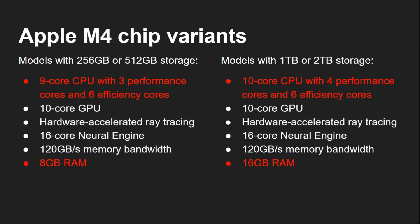Both variants have a boosted clock speed of 4.4 gigahertz, and both are built using TSMC's second-generation 3-nanometer process node. If you dig into the specifications, there is a 9-core CPU with three performance cores and six efficiency cores if you go for 256 or 512 gigs of storage with 8 gigs of RAM. If you want the 10-core version, you have to go with one terabyte of storage and 16 gigabytes of RAM. So most people, even with half a terabyte of storage, are going to get eight gigs of RAM and the nine-core CPU. Do beware when making your buying choice.